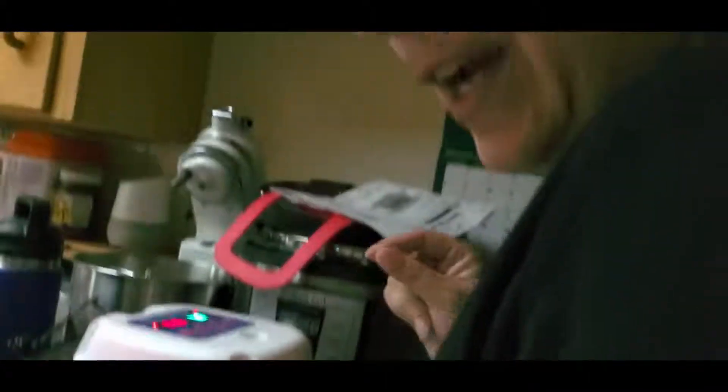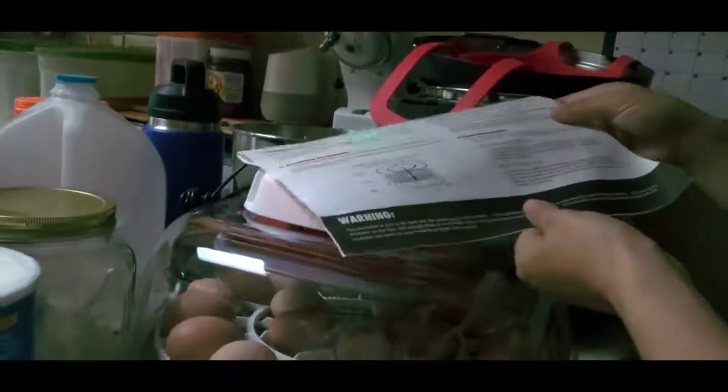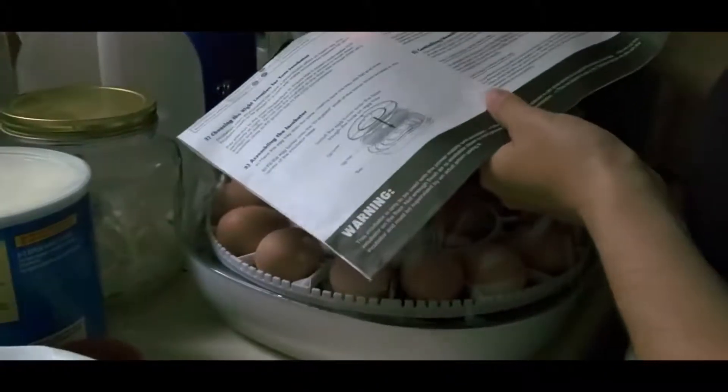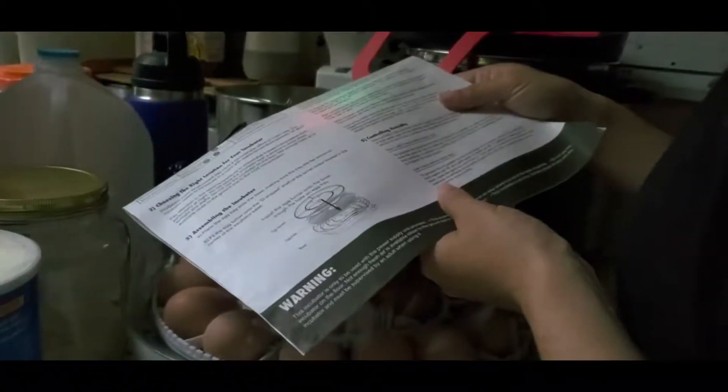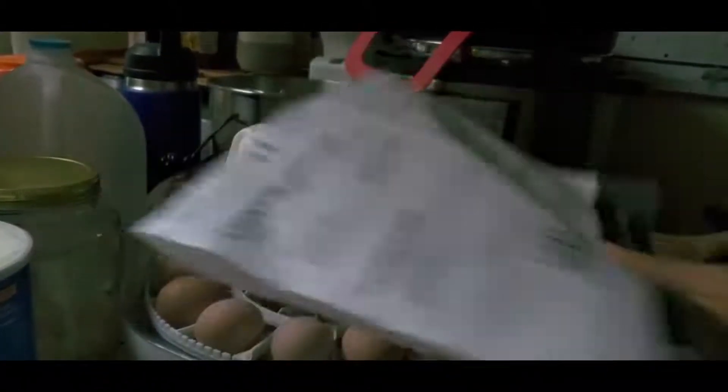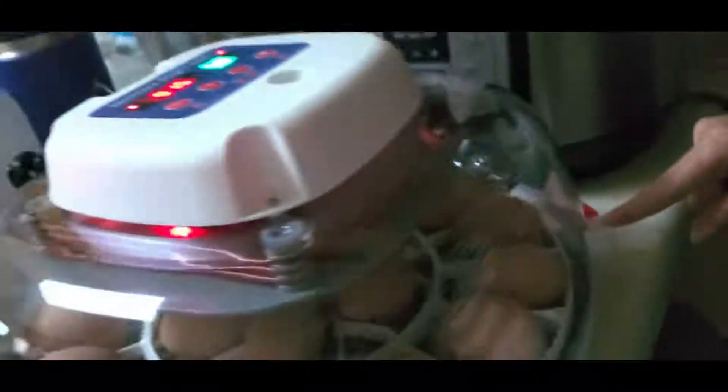Three days before hatching though, we do have to do a slight change in procedure because according to the instructions, the last three days before hatching, we need to put water in port B, which is right here, along with port A.